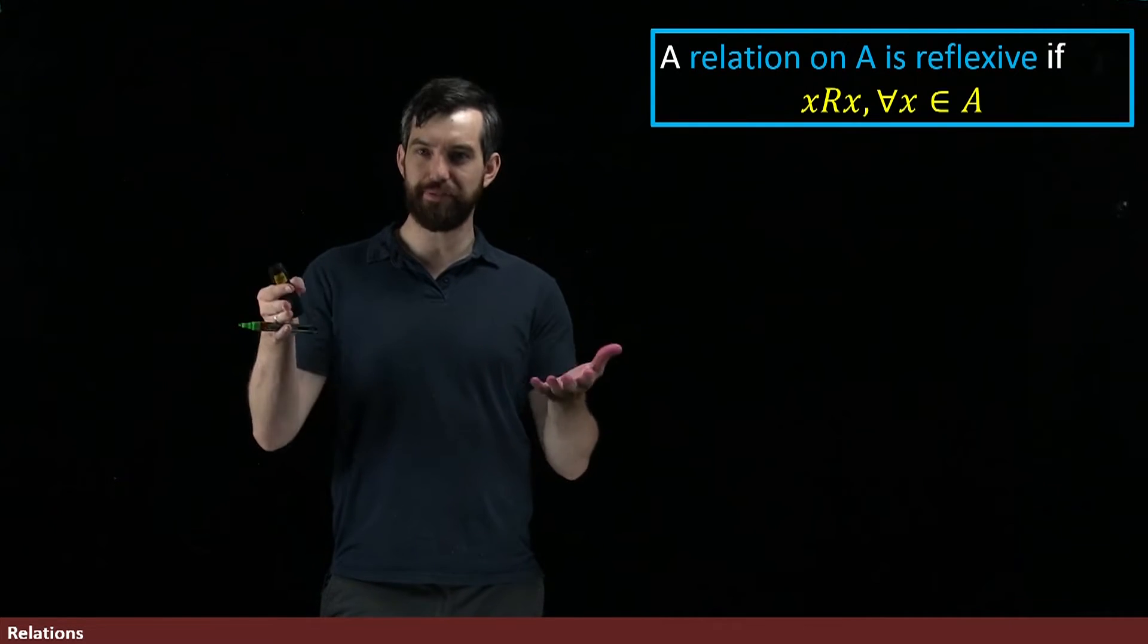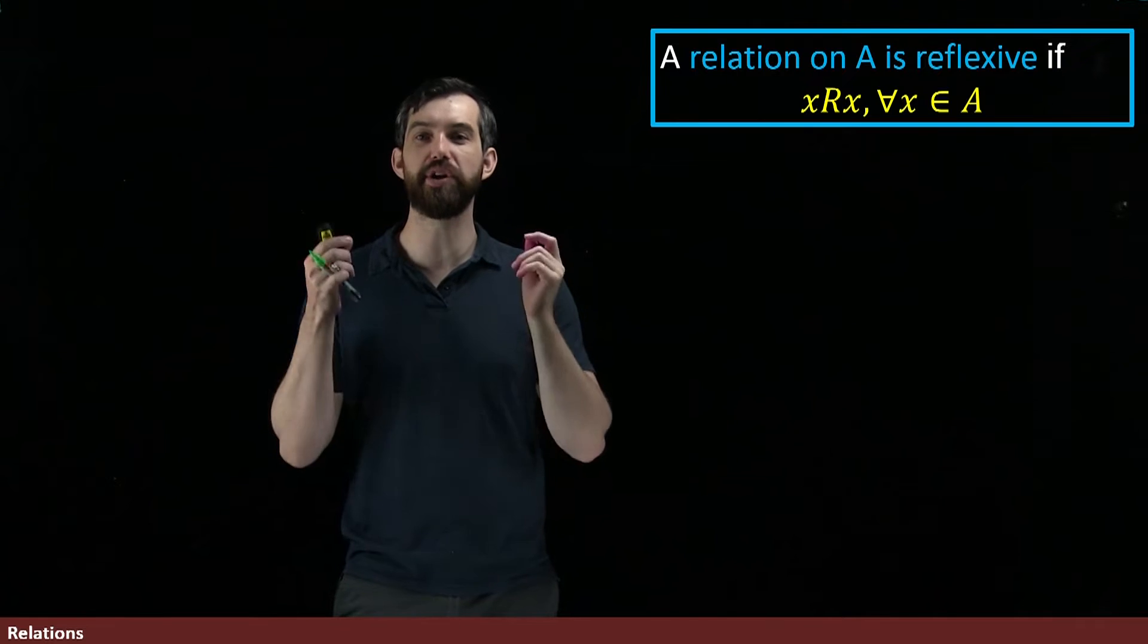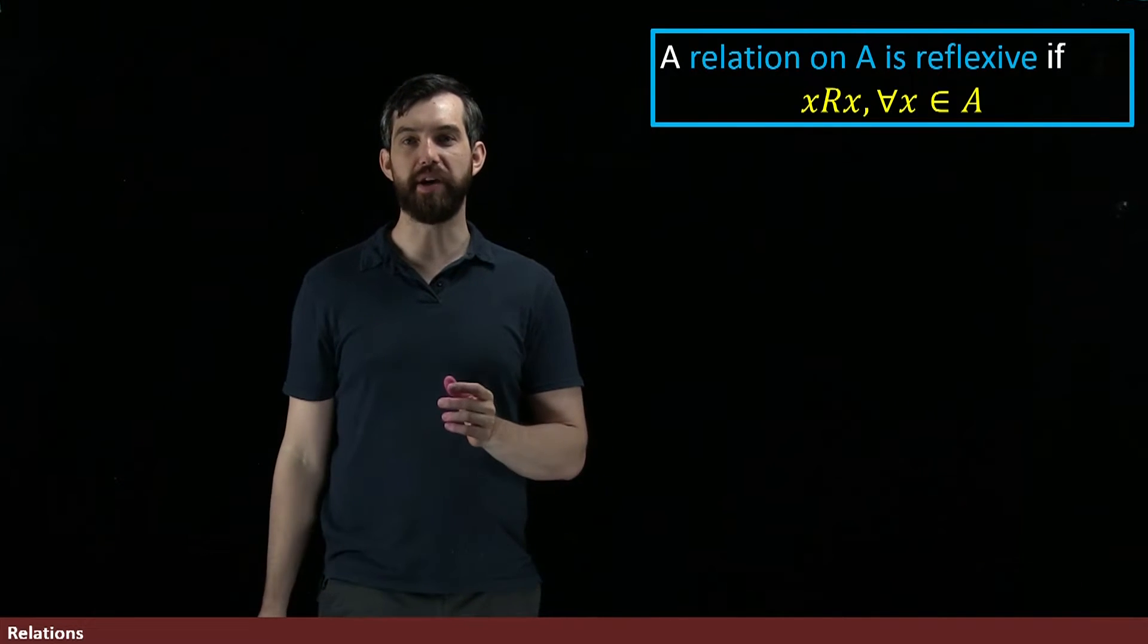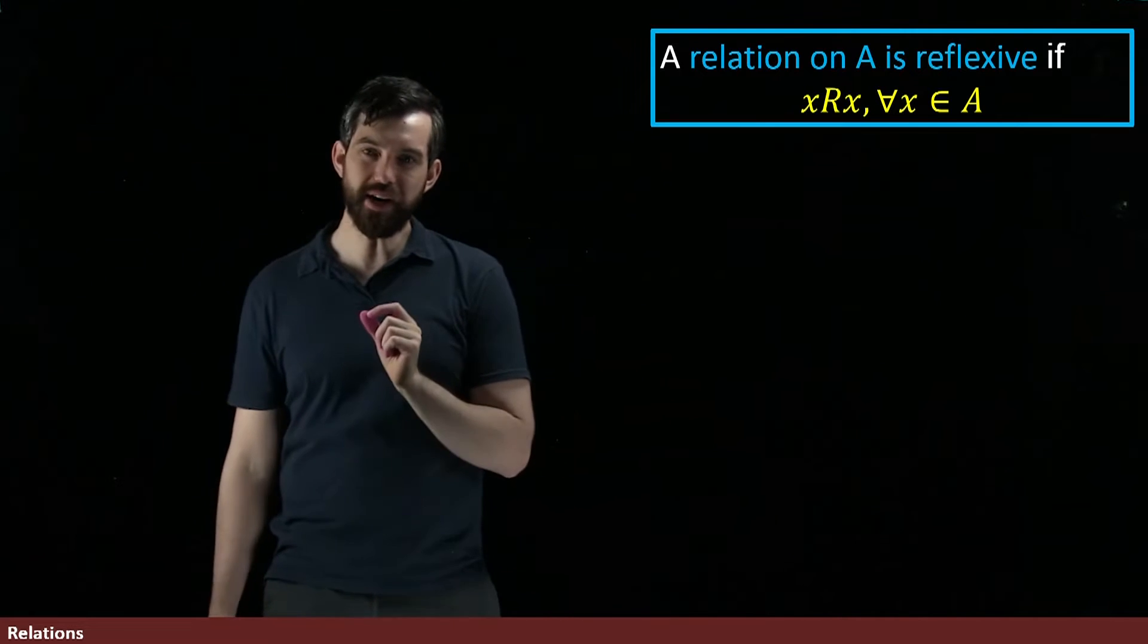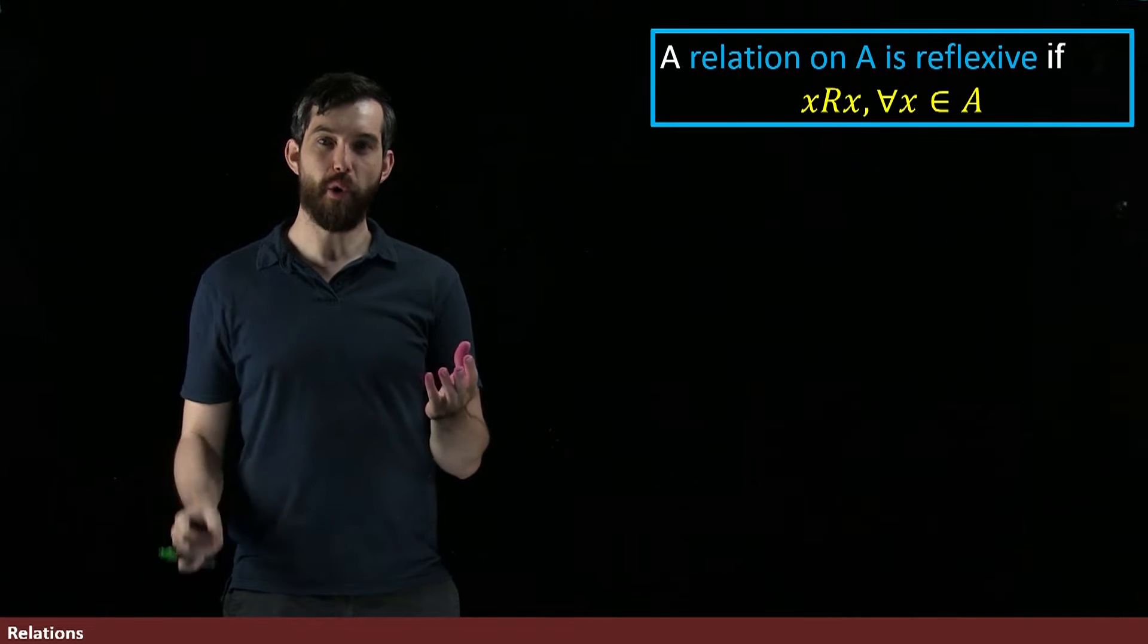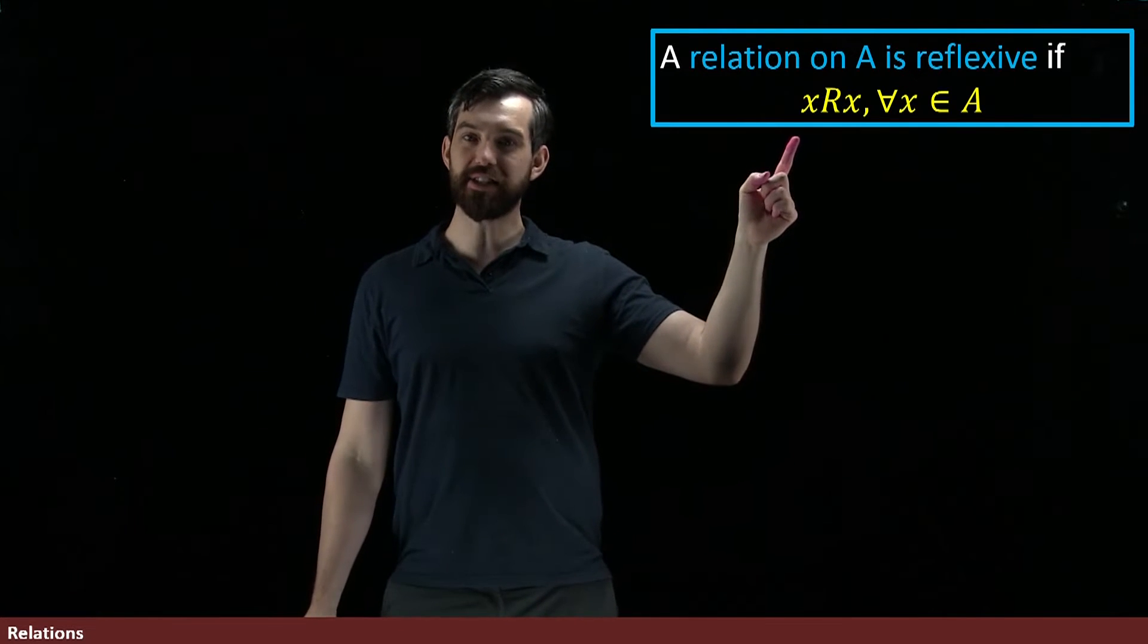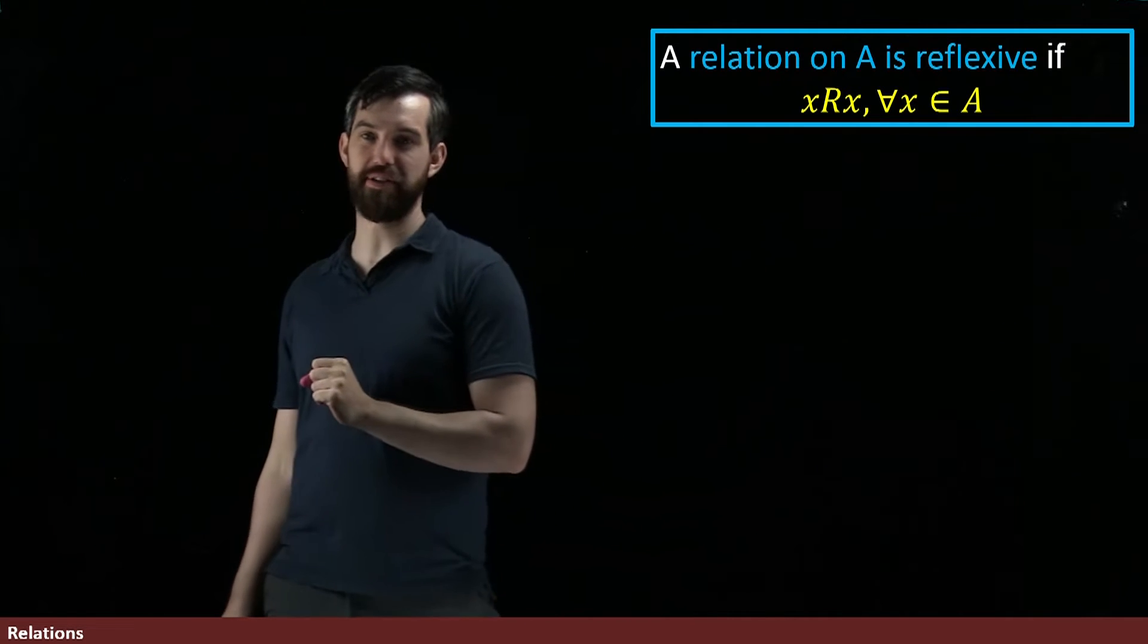We then have a list of different properties that apply to relations on a set. One of them is this property of reflexive. We're going to say a relation is reflexive if it relates to itself. Or in other words, if xRx for all values of x inside of A.